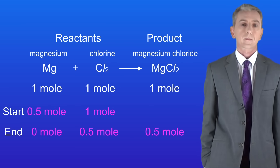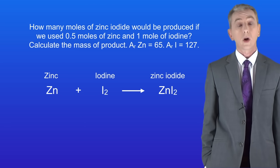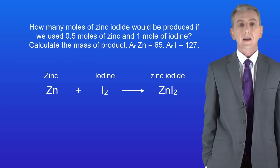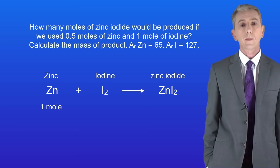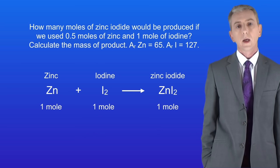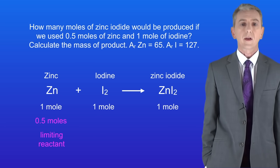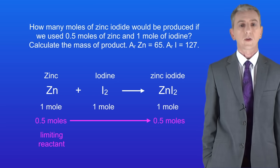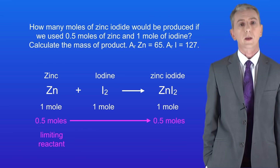Let's look at a typical question. How many moles of zinc iodide would be produced if we used 0.5 moles of zinc and 1 mole of iodine? Looking at the chemical equation we can see that 1 mole of zinc reacts with 1 mole of iodine to make 1 mole of zinc iodide. We've been given 0.5 moles of zinc, which makes that the limiting reactant. That means that we must make 0.5 moles of zinc iodide. In this reaction the amount of iodine has no effect on the amount of product because the iodine is in excess.